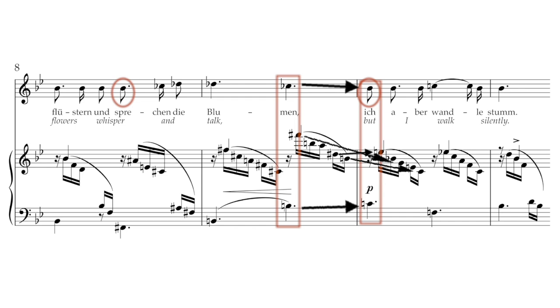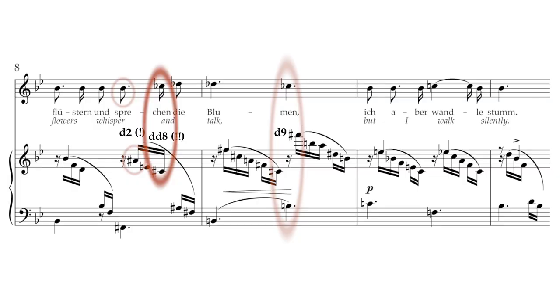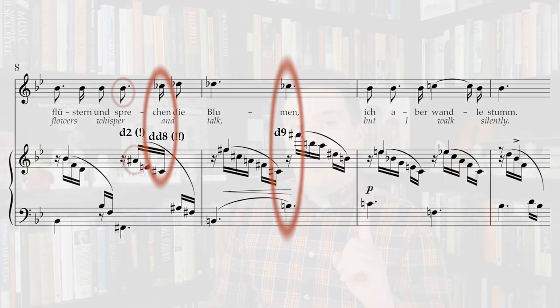We can only get a sense of Schumann's harmonic thinking if we take the voice into account — but that exists in a whole parallel universe. Bb changes enharmonically to A-sharp while the voice stays on Bb. So we have a diminished second, followed by a doubly diminished octave, and by the time we get to that diminished ninth, it's certifiably cursed music theory content. Should have done this episode near Halloween. So he writes an octave that sounds like a minor seventh, and then a ninth that sounds like an octave.